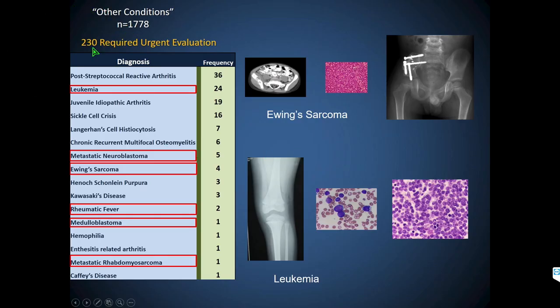The systematic approach leads us only so far — ultimately we do have to use intuition. Of those other conditions, 230 required more urgent evaluation by subspecialties. You can see interesting diagnoses: leukemia, Ewing sarcoma, rheumatic fever, and other neoplastic processes. I believe that this systematic approach is getting to these answers much earlier than if we allow these patients to just play out through the system.